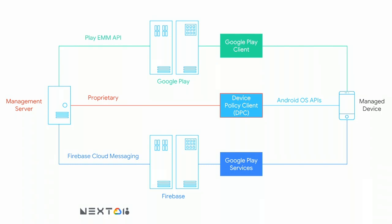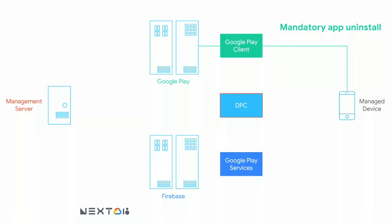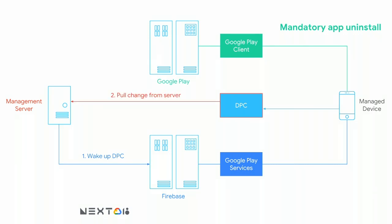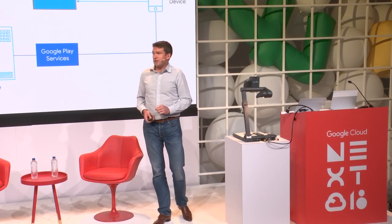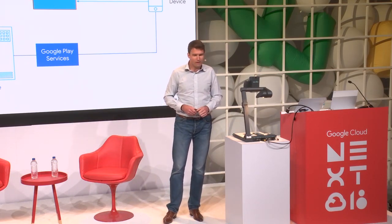That's three different interfaces you need to build against. For one use case — a mandatory app uninstall — you need to: wake up the DPC using push messaging, have the device policy client pull the new policy from the server, unblock uninstall on the device, confirm the policy change, initiate the uninstall request to Google Play, then check completion and possibly retry. That's seven different interactions you have to develop.